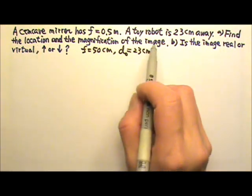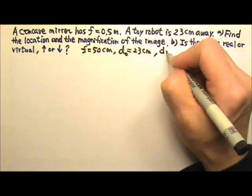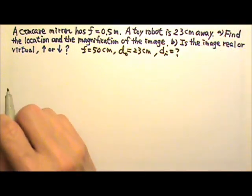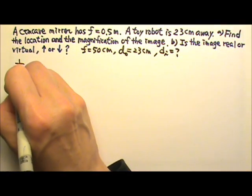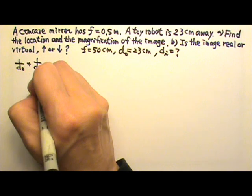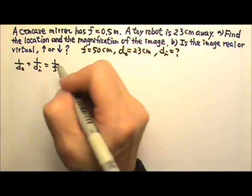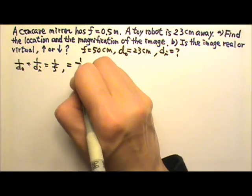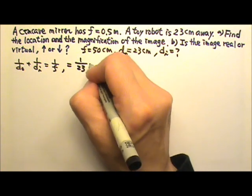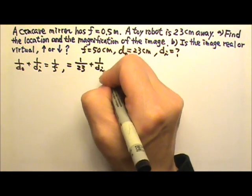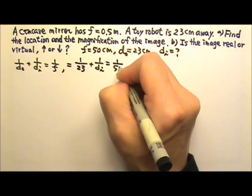And we want to find the location of the image. That means we're looking for dI. So we can use the mirror equation 1 over dO plus 1 over dI equals 1 over F. And that will be 1 over dO, 23, plus 1 over dI, and that equals 1 over 50.